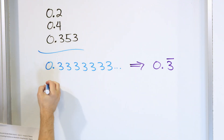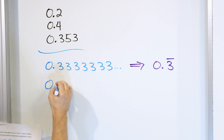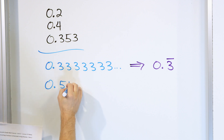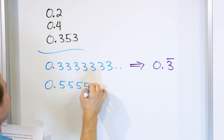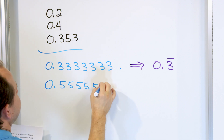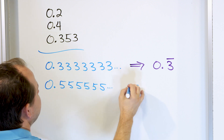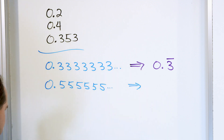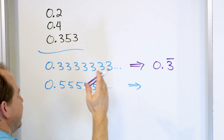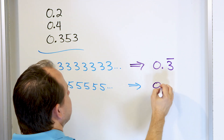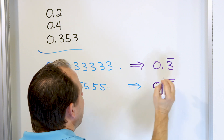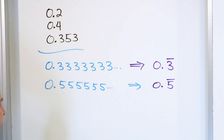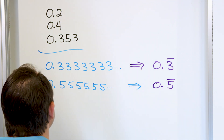As another example, what about 0.555555...? Well, the five is the repeating digit. So you just put a five with a bar over the five. That tells you that the five goes on and on forever.